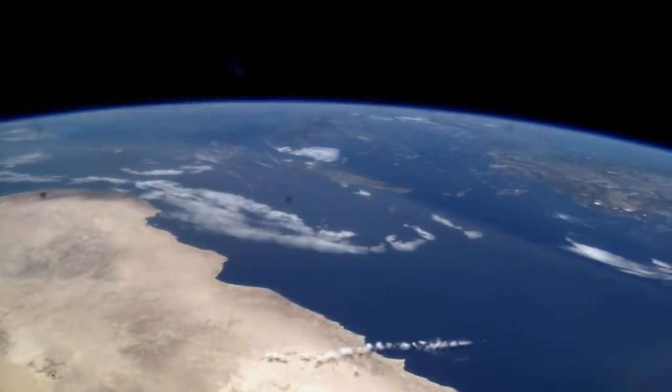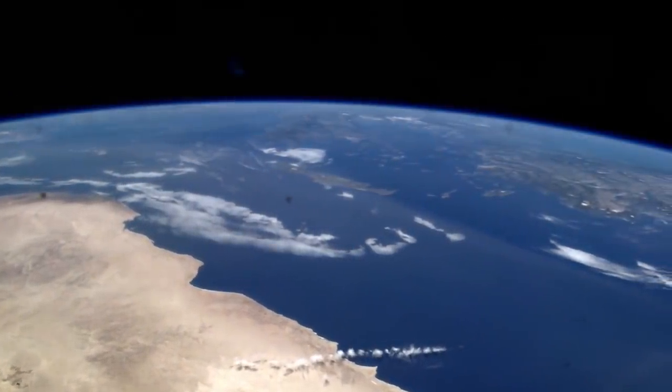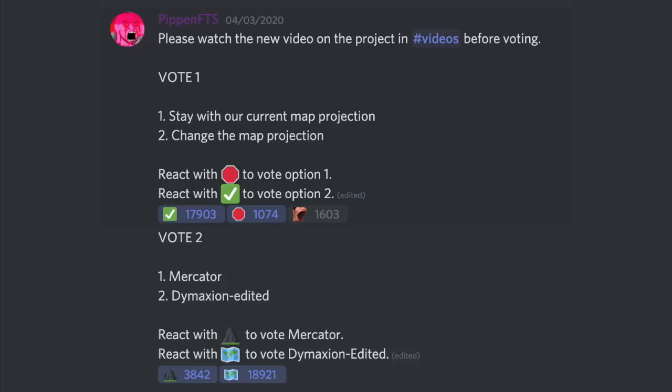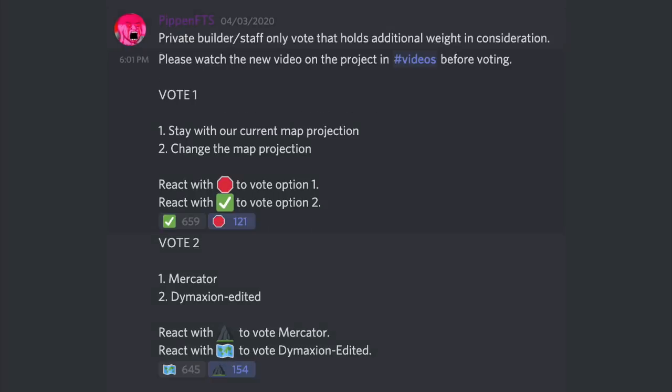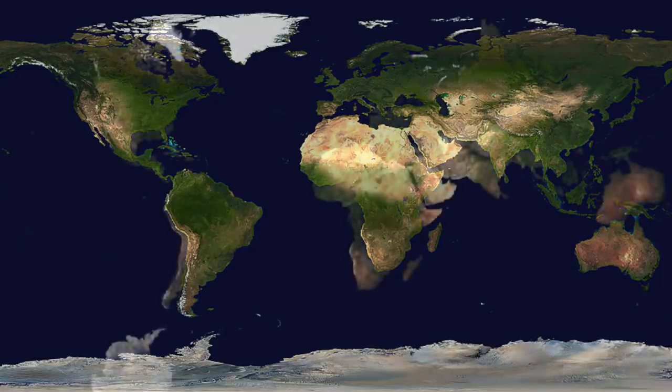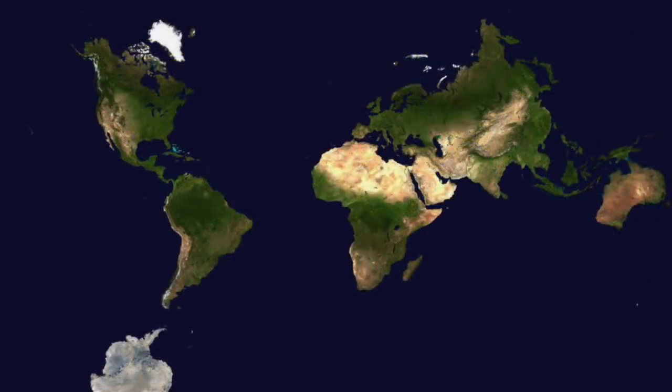A week and a half ago, I asked you to help us vote to decide the final map projection for this project. The results were a landslide, unanimous across both the public vote and the private builder vote. You wanted to change the projection and see it as a unique, custom map for the Build the Earth project.